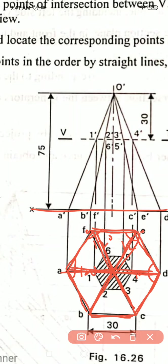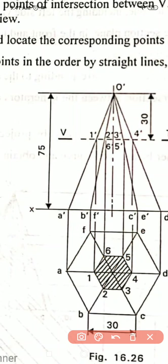In the front view we will get a shape like this. Give the numbering to the hexagonal shape — starting from this point: a, b, c, d, e, and f. Now project all the points onto the reference line from a, b, c, d, and so on.